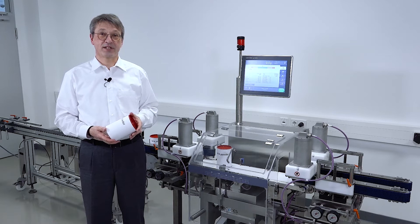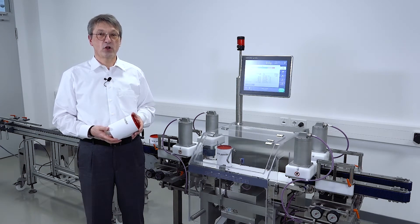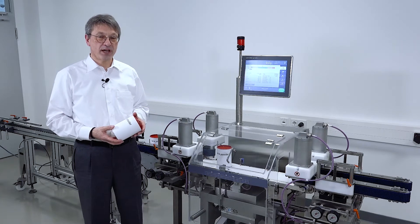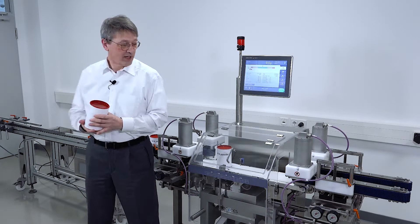Product handling is key to the success when we're talking about dynamic checkweighing. In normal production lines, we have a chain conveyor in between the filler and the checkweigher.